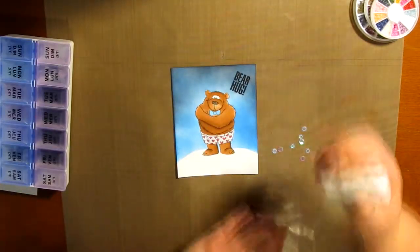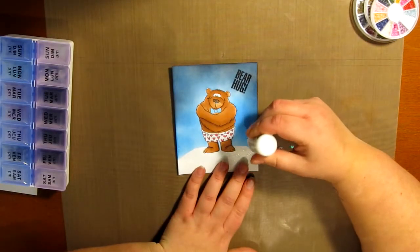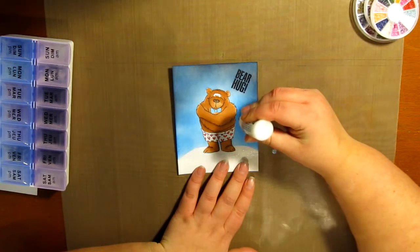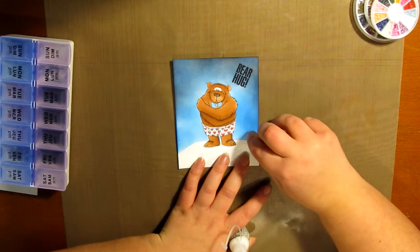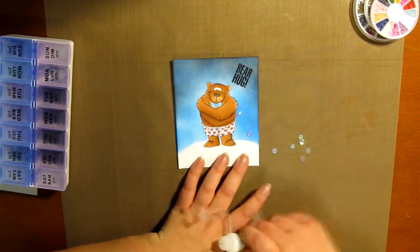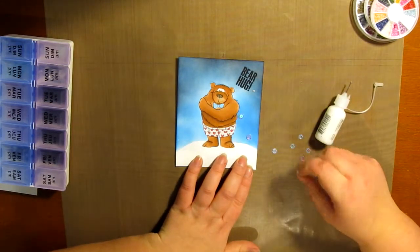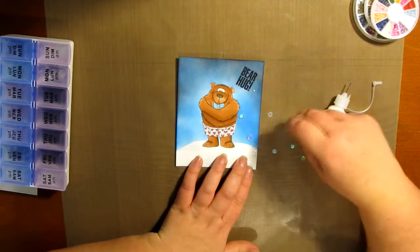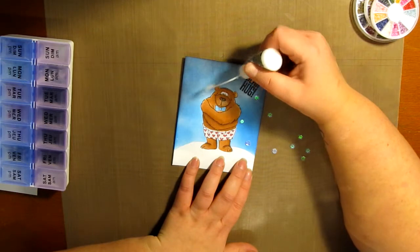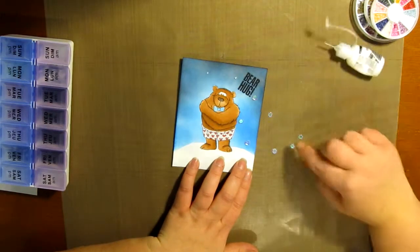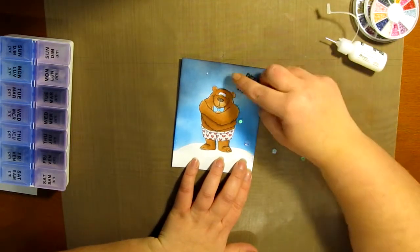So I grabbed my almost translucent pearlescent, iridescent sequins and I glue on a few of them with my Ranger Multi Matte Medium. I just sporadically kind of put a little blob, put a sequin, put a little blob, put a little sequin.